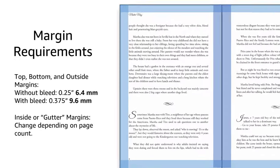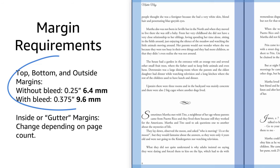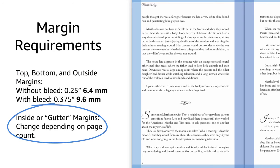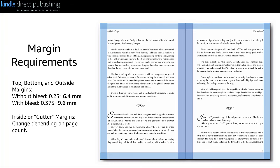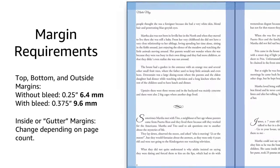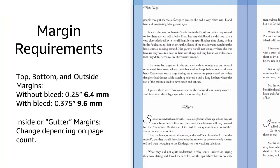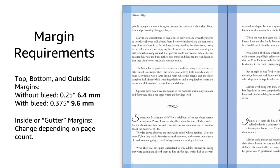There are four margins you need to set: the top, bottom, outside, and inside margin. The top, bottom, and outside margin are collectively referred to as the outside margins because they run around the unbound edges of the book. The outside margins are often the same, but they don't have to be, as long as they all meet the minimum size requirements, which we'll discuss next.